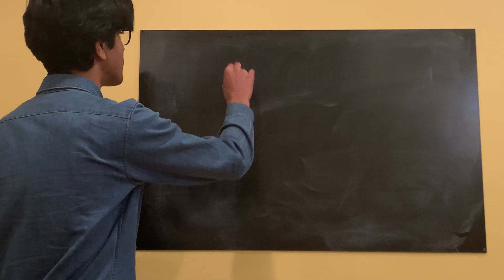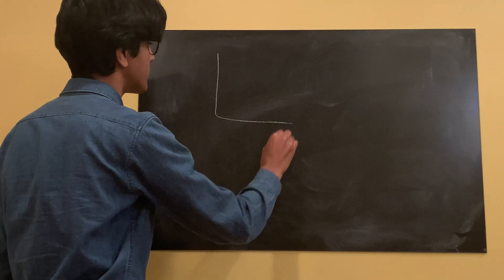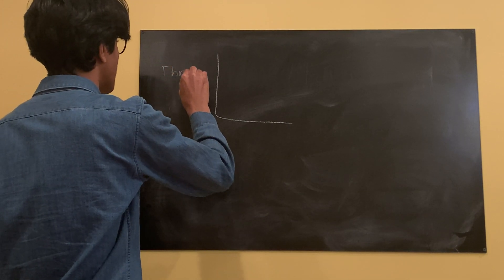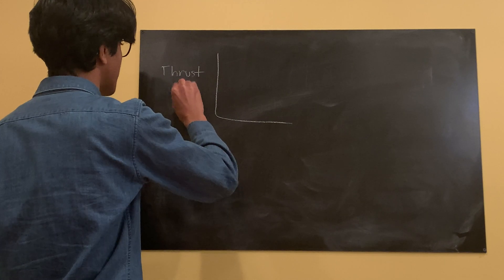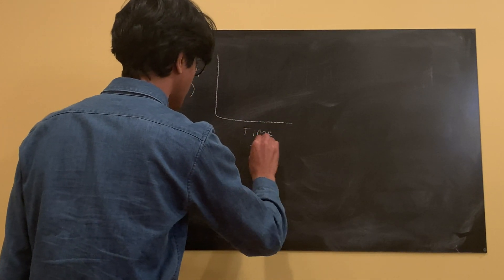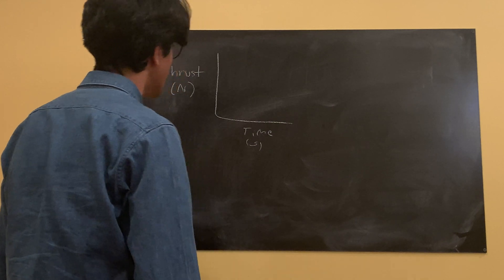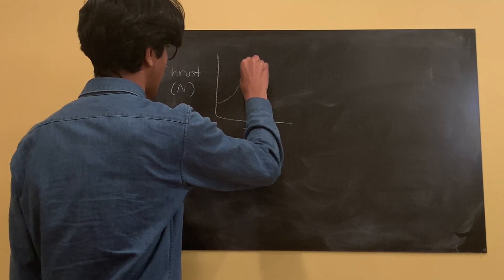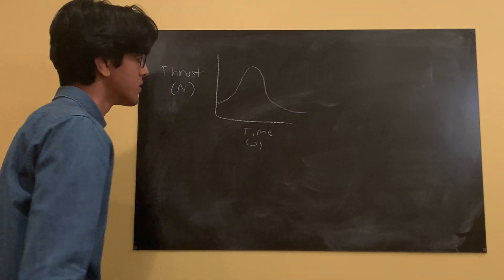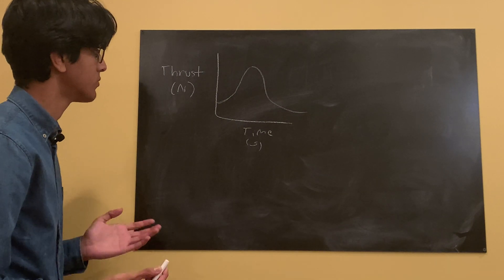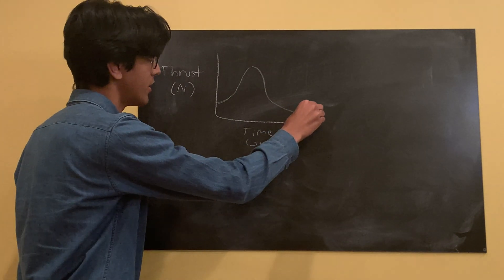But for now, let's just say that we have our data. So let's get our graph of thrust in newtons versus time in seconds. And let's say the graph looks something like this. This is a good approximation of what a thrust versus time graph would kind of look like, kind of levels out at the end.